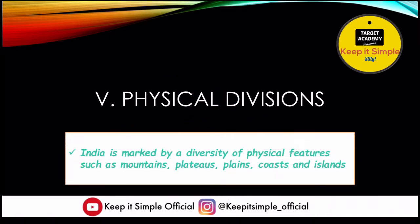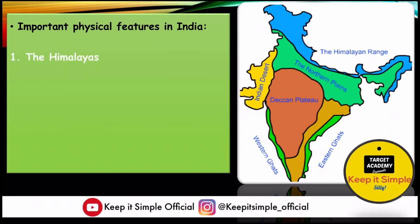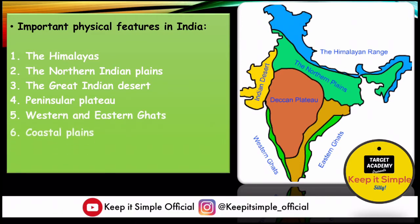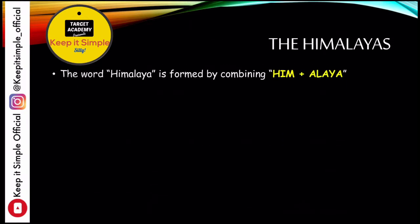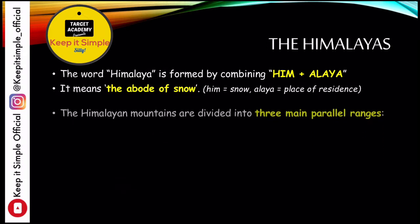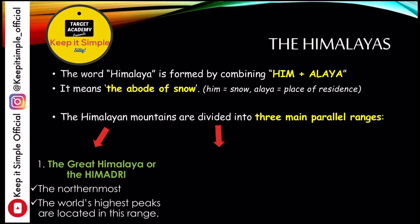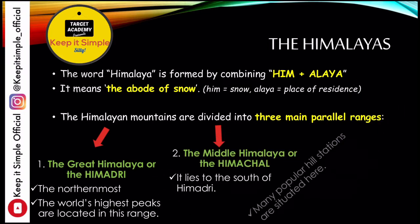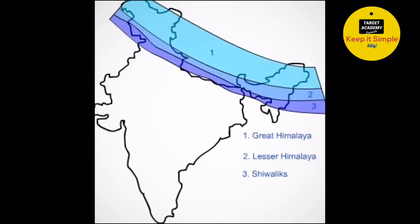Let's move on to our next block: Physical Divisions. We have talked about Political Divisions, and now we have Physical Divisions. India is marked by a diversity of physical features like mountains, plateaus, plains, coasts, and islands. These are physical features — not man-made, but created by nature. Starting with the Himalayas: the word 'Himalaya' comes from 'Him' plus 'Alay,' meaning the abode of snow. 'Him' means snow and 'Alay' means place of residence. The Himalayan mountains can be divided into three parallel ranges: the Great Himalayas (Himadri), the Middle Himalayas (Himachal), and the Outer Himalayas (Shivalik).